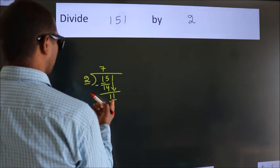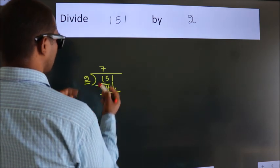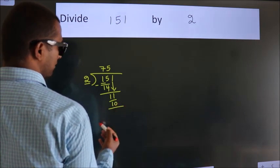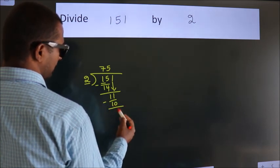A number close to 11 in 2 table is 2 5s 10. Now, we subtract. We get 1.